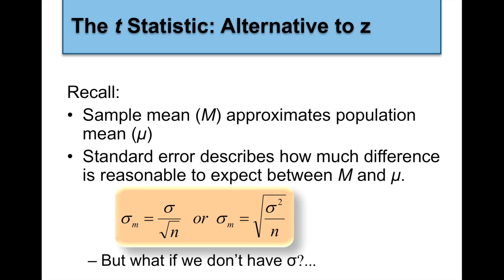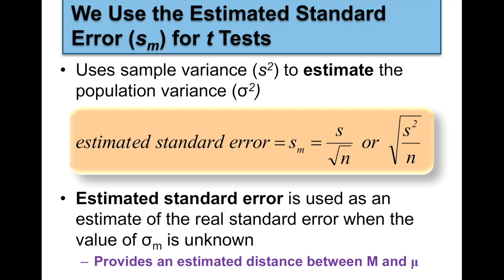The t statistic is the alternative to the z. Keep in mind that the sample mean should approximate the population mu, and standard error describes how much difference is reasonable to expect between the sample mean and population mu. If we don't know the population standard deviation, we use estimated standard error, noted as s sub m. We use sample variance, s squared, to estimate the population variance.